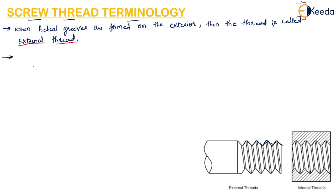When the helical grooves are formed on the interior of a circular hole, it is called an internal thread or nut. In nuts, the threads are formed on the inside of a circular hole — that is an internal thread.